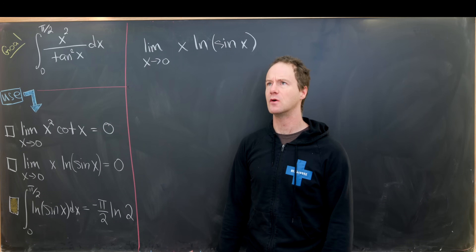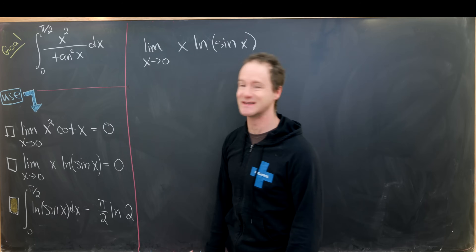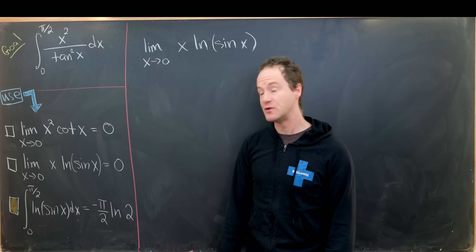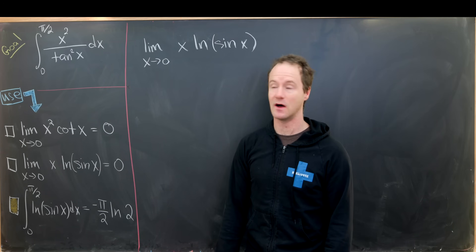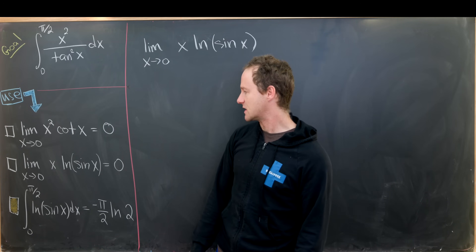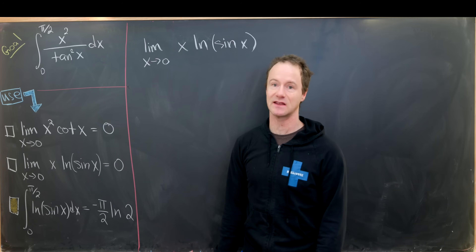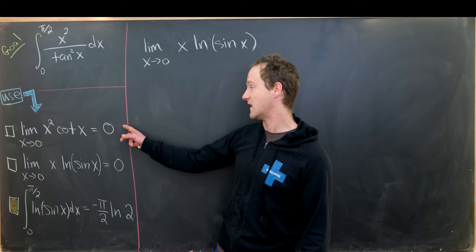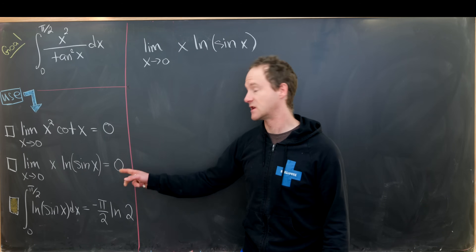I made a video when the channel was a lot younger where I derived this identity. See if you can find it — if you post a link in the comments I will pin that comment. We'll actually focus on the second limit, as we will derive the value for the first limit via this same calculation.